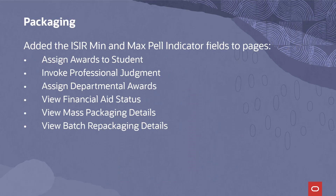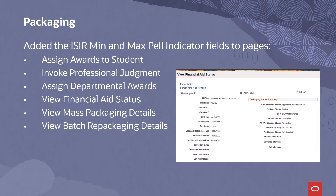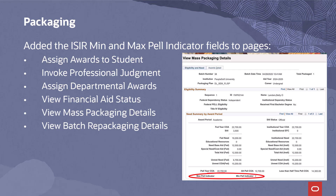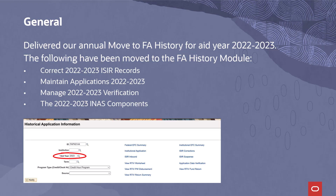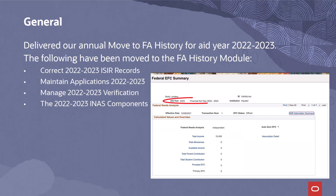We have added ISA min and max Pell indicator fields to the following pages: Assign Awards to Student, Invoke Professional Judgment, Assign Departmental Awards, View Financial Aid Status, View Mass Packaging Details, and View Batch Repackaging Details. We delivered our annual move to FAA history for award year 2022-2023. The following have been moved to the FAA history module: Correct 2022-2023 ISA records, Maintain Applications 2022-2023, Manage 2022-2023 Verification, and the 2022-2023 INAS components.